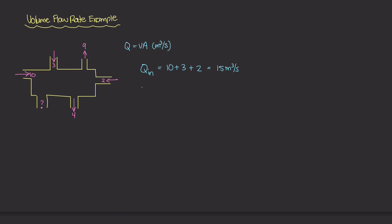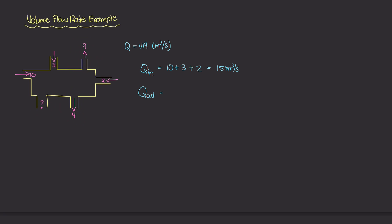I can do the same thing for Q out — the volume flow rate leaving the system. 9 is leaving the system and 4 is leaving the system, but this question mark we don't know yet. So I know for sure that 9 and 4 are leaving, which gives us 13 meters cubed per second so far. But what about this question mark? Is that volume coming into the system, is it leaving the system, and what is the value of that flow rate?